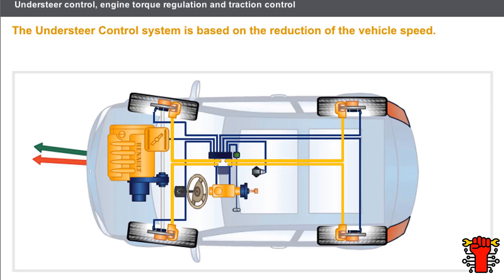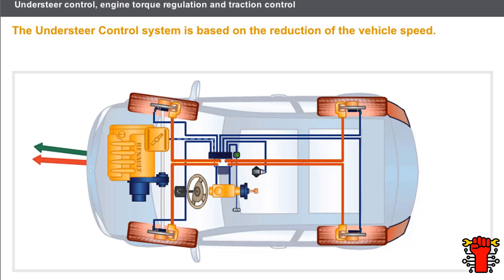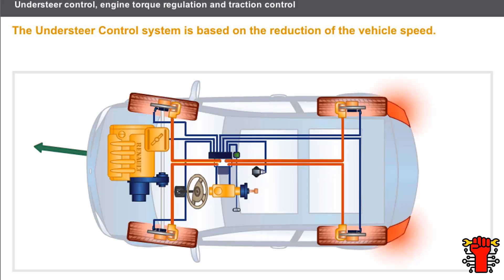The understeer control system is based on the reduction of the vehicle's speed. The computer takes account of the information from the sensors to calculate the path followed by the vehicle and the path desired by the driver. The correction is made by braking of two or four wheels at different pressures, and the reduction in the engine torque. Braking of more than one wheel reduces the speed of the vehicle whilst retaining improved stability. The reduction in the engine torque facilitates the weight transfer and therefore the re-establishment of front axle grip. The deceleration obtained during regulation causes the stoplights to come on.